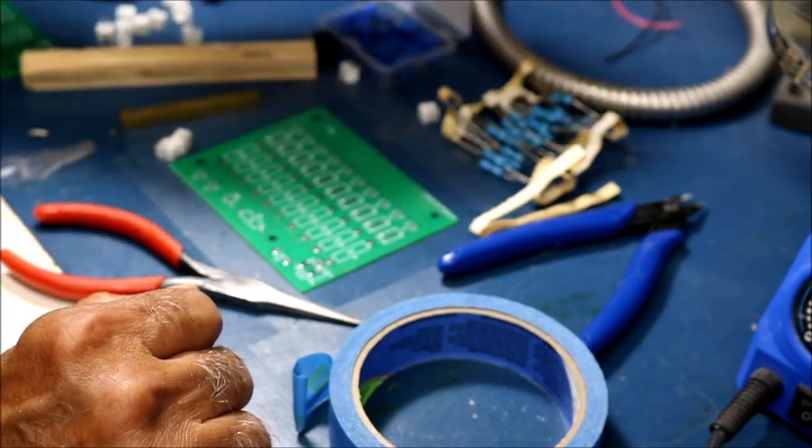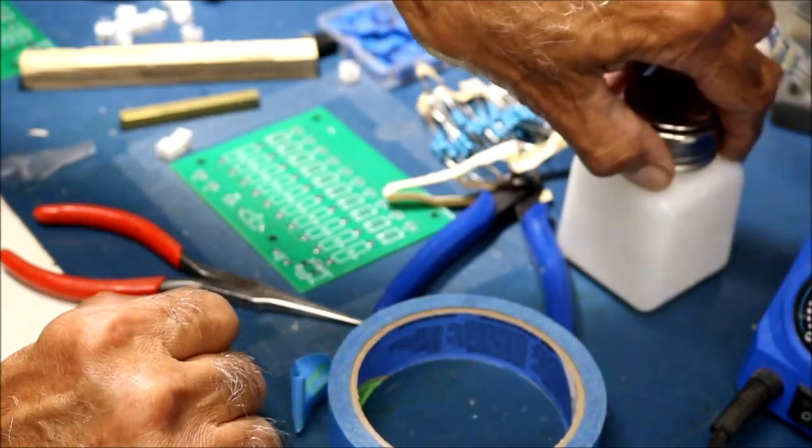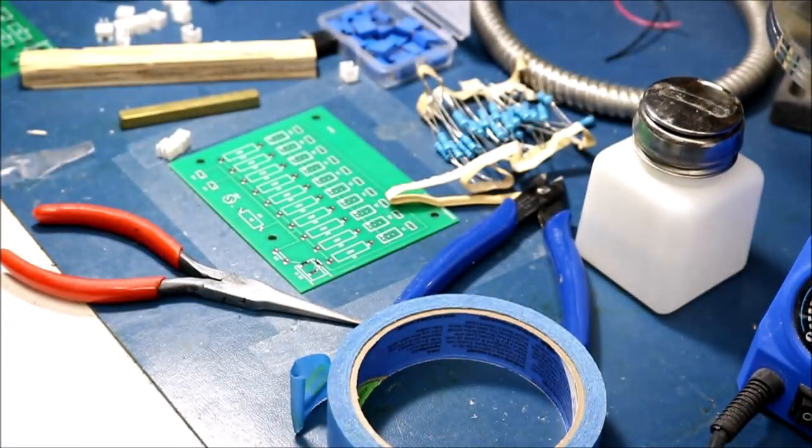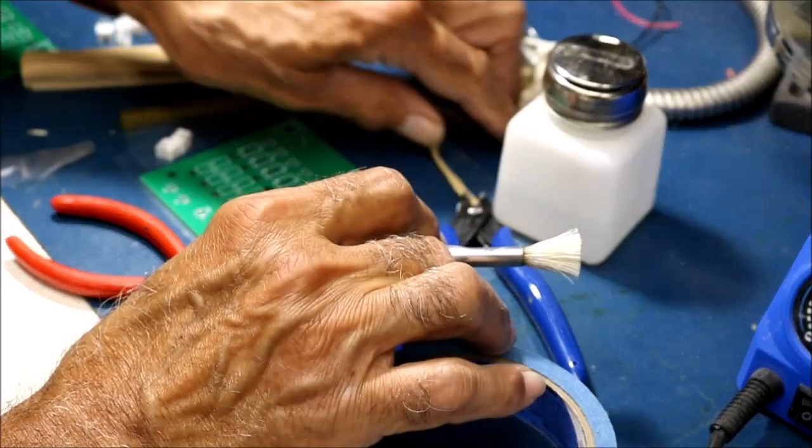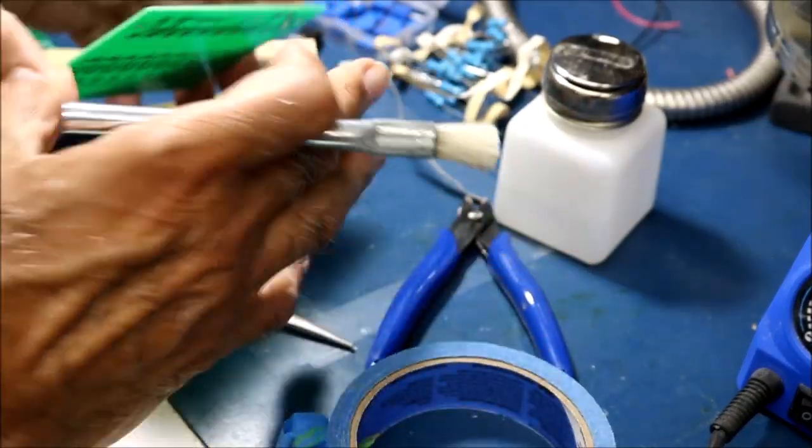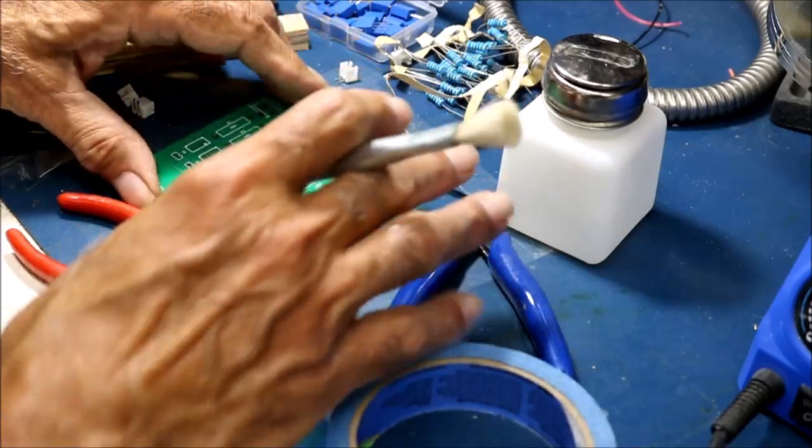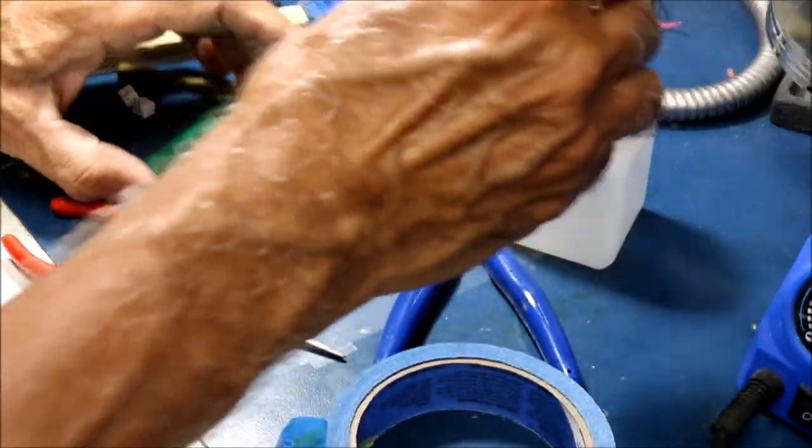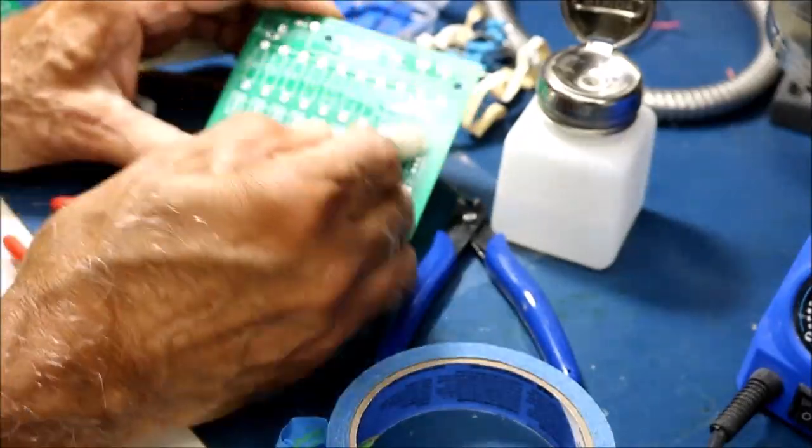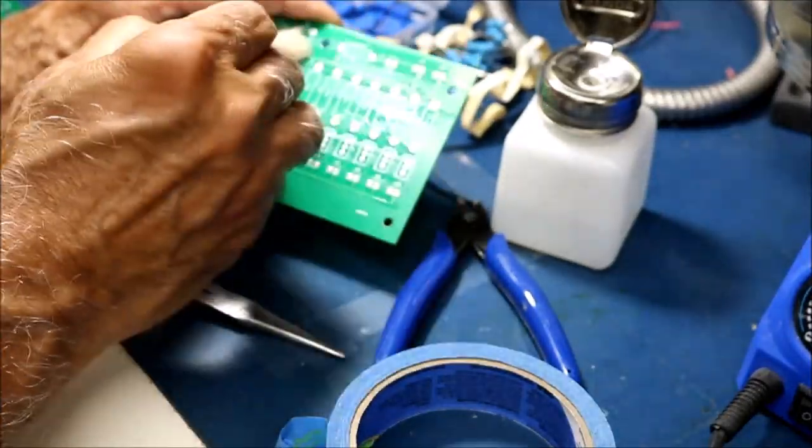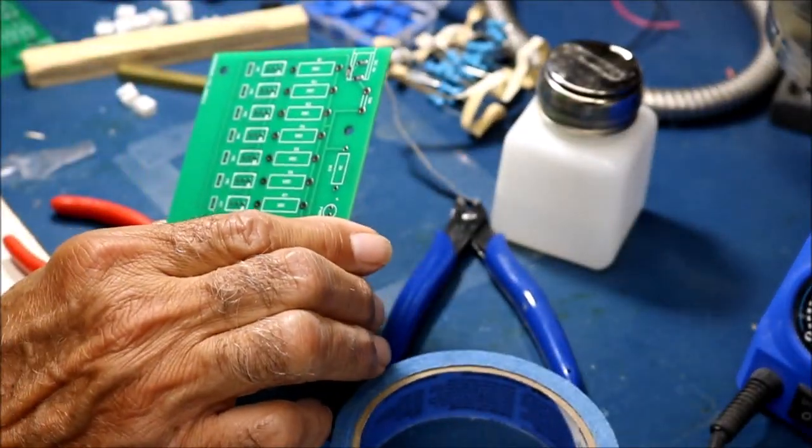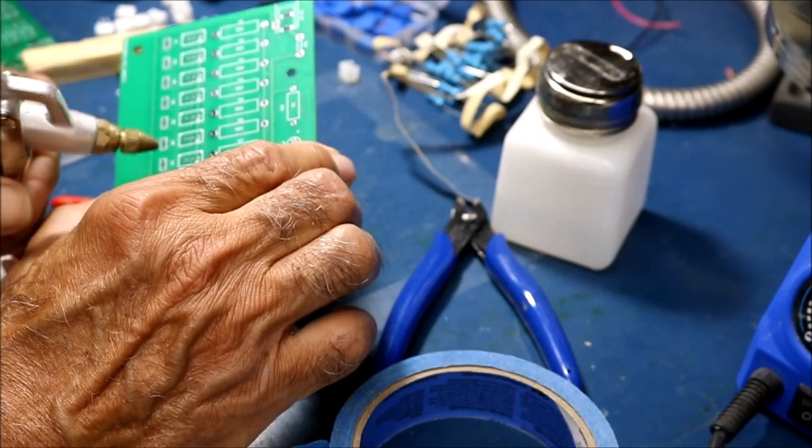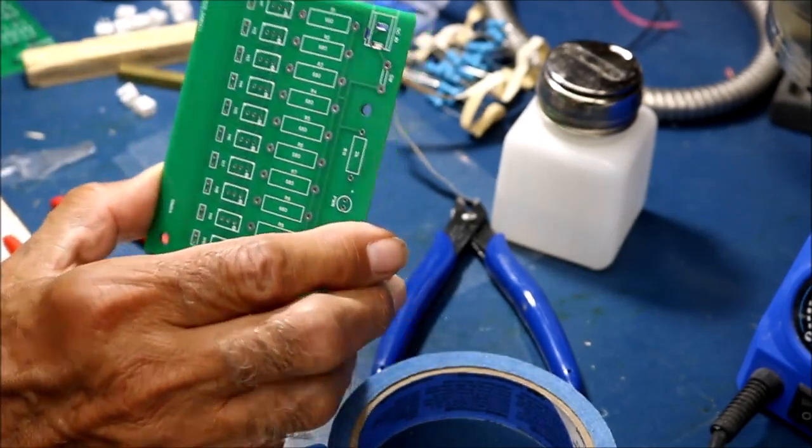The other thing you will need is some alcohol and a brush. If you've been touching the board and you may have fingerprints on it, the first thing you should do is wash it with some alcohol. You just take some alcohol and wash the board with it like this and let it dry or blow some air across to clean off the board.